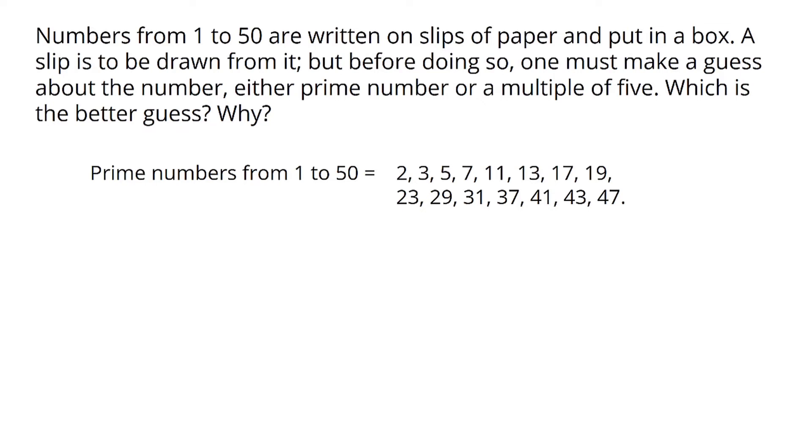Prime numbers from 1 to 50 are: 2, 3, 5, 7, 11, 13, 17, 19, 23, 29, 31, 37, 41, 43, and 47.